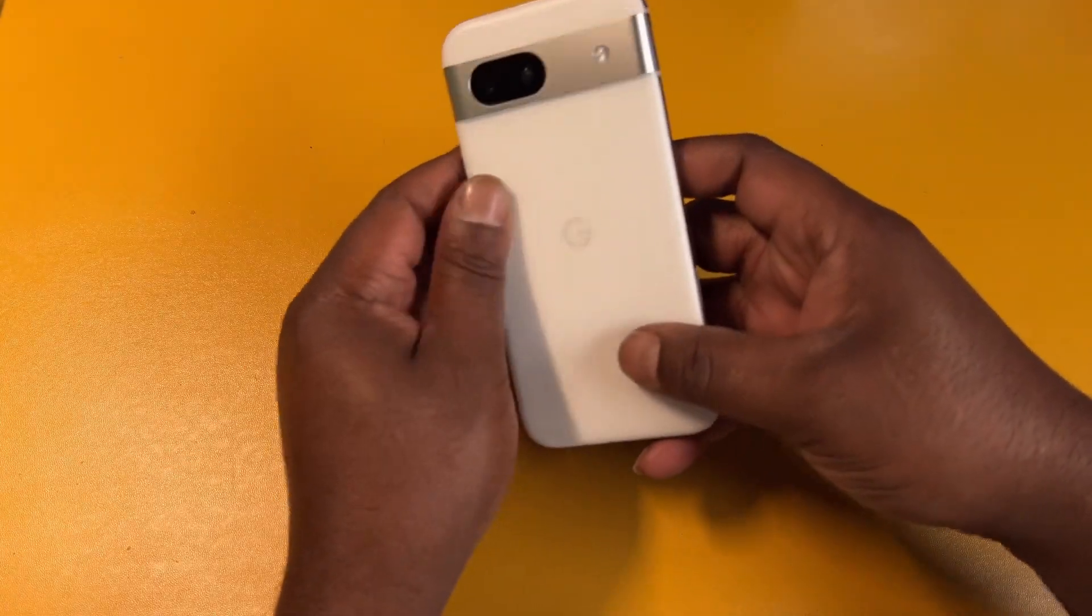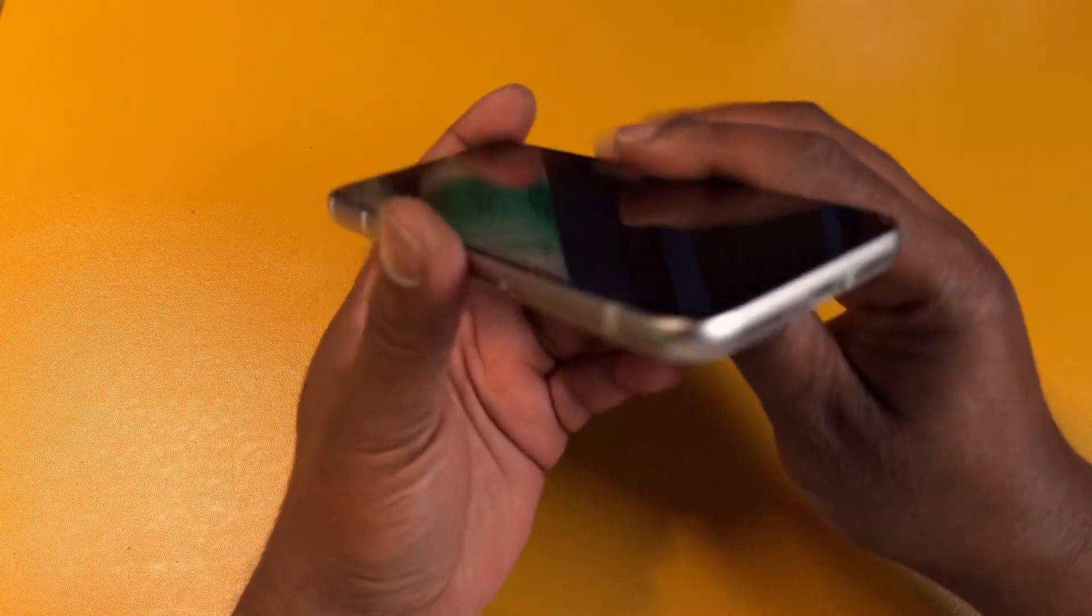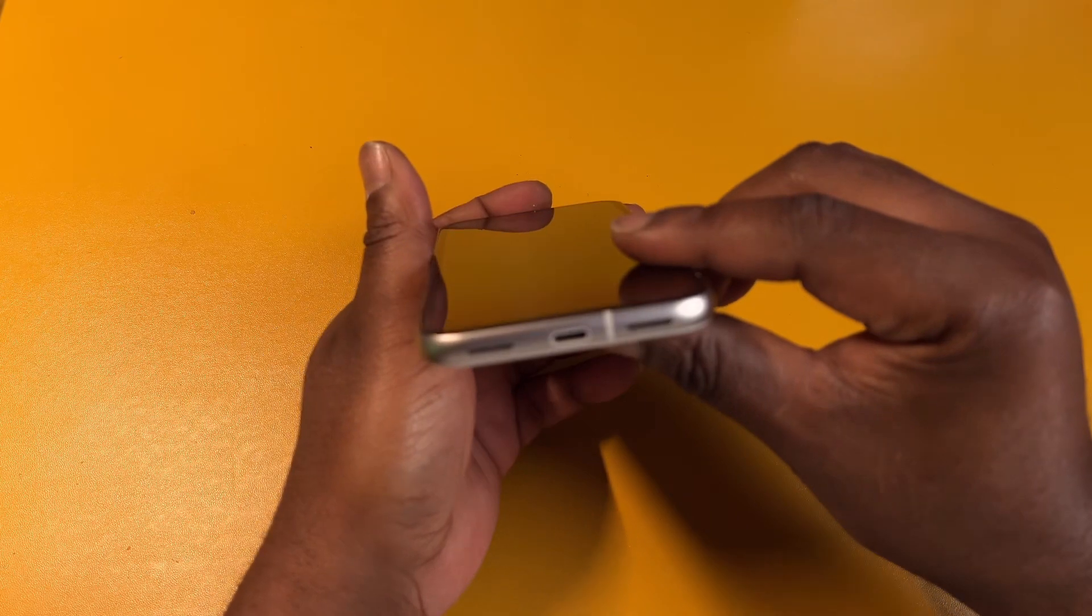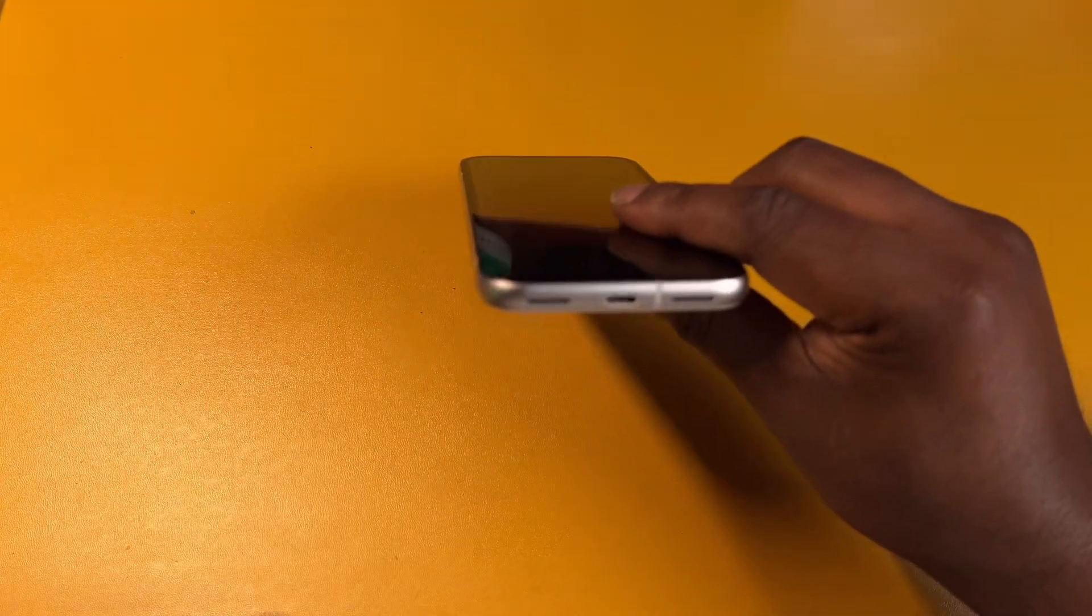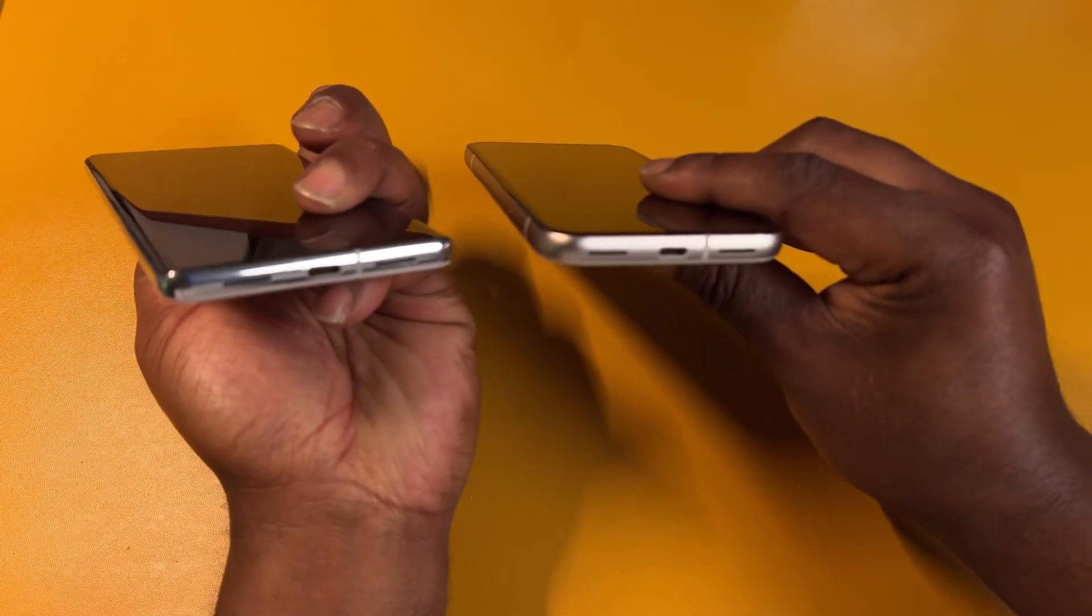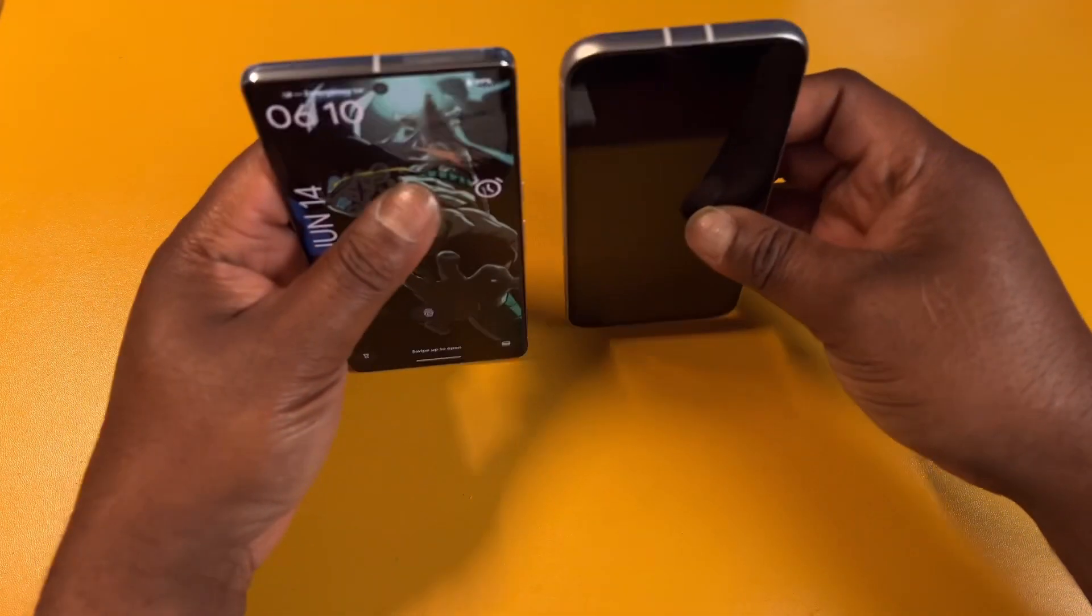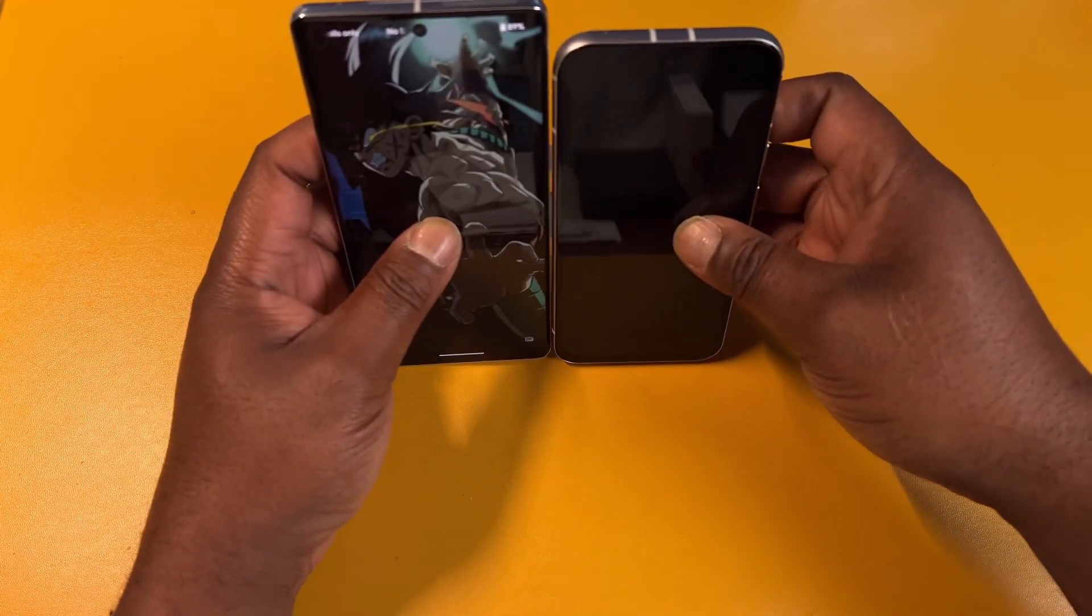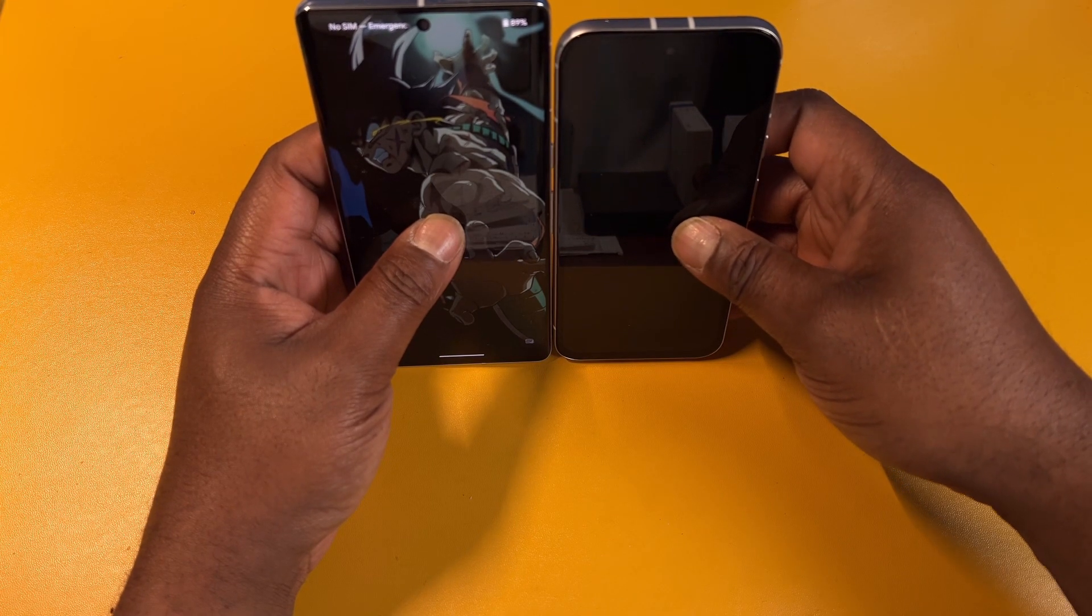And the screen is flat, look at that. Look at that flat screen bro. You got the USB port, you got the speakers, everything's pretty much the same. I mean just a lot smaller, not that much. I think the 8a is about the same size as the Pixel 8.